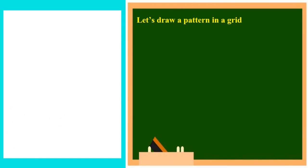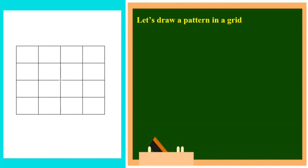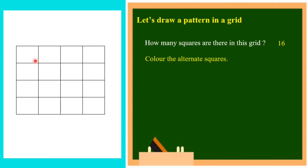Let's draw another pattern in a grid. Here another grid is provided. How many squares are there in this grid? Counting — 4, 8, 12, 16 — totally 16 squares are there. Next, let's color the alternate squares — color this one, leave this one, color this one, leave this one, then color this one, leave this one. We have to color the alternate squares.